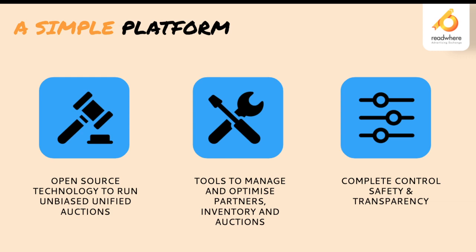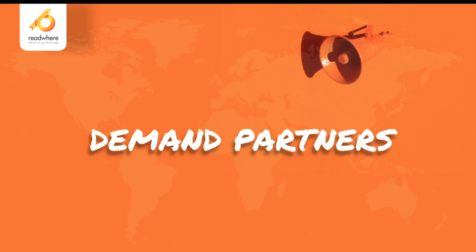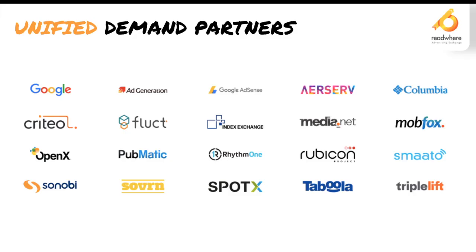The platform is open-source technology running unbiased unified auctions with tools to manage and optimize partners, inventory, and auctions. There are various tools to choose which demand partners to use — Rubicon, Index Exchange, OpenX, and so on. There is complete control in terms of safety and transparency regarding winning bids and ad requests. Demand partners on the unified platform include Google Ad Exchange, AdSense, Ads of Colombia, Smaato, Index, Rhythm One, and others.